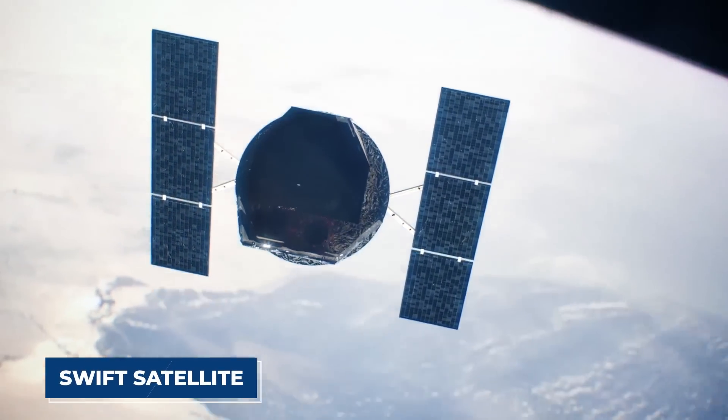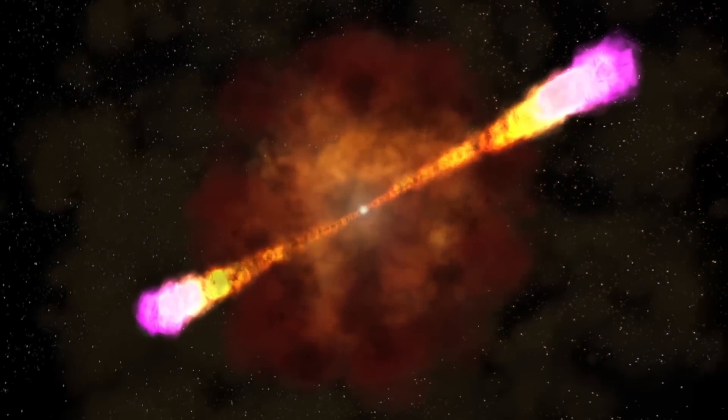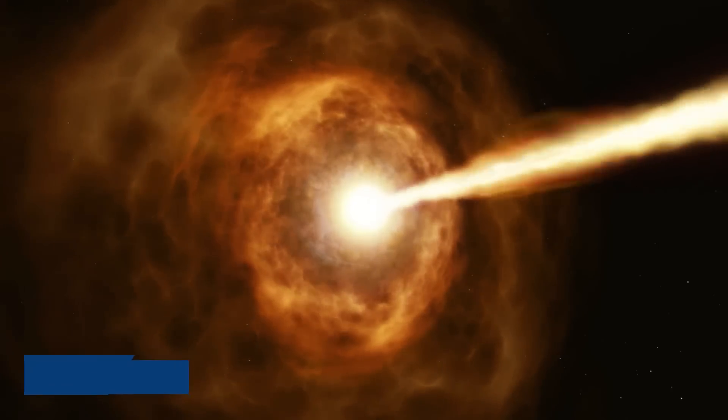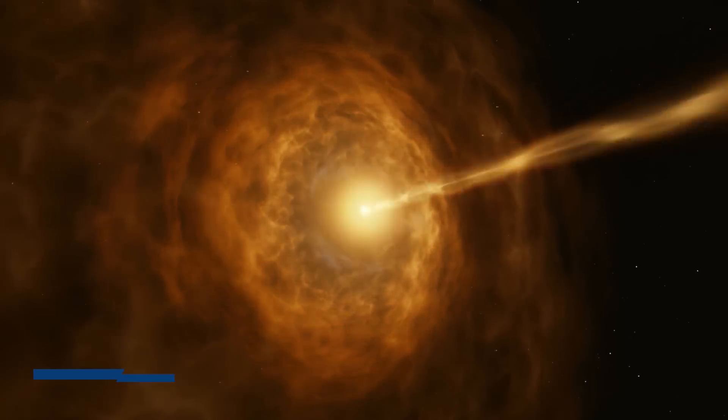Back in 2006, NASA's Swift satellite detected an exceptionally powerful gamma ray burst named GRB 060614 in a very strange region of the sky.